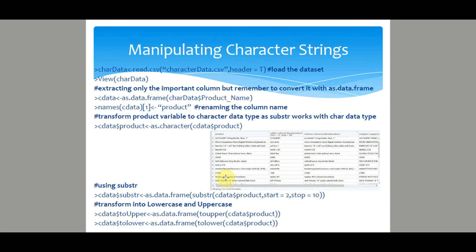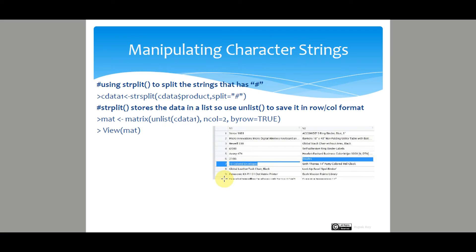These strings, if we have observed, has hash after the value got split into two separate rows. However, str split function stores the data in a list, so use unlist to save it in a row columnar format. Type matrix unlist cdata1, then the number of columns is equal to 2, by rows is equal to true. View the data to display the output as a data frame.